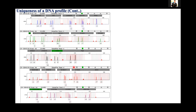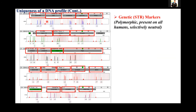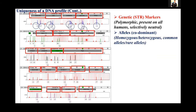This is a representative image. To understand the profile, I will share some terminologies. These are STR markers — D3S1358, D8S1179 — called autosomal STR markers. The characteristics of autosomal STR markers are: they are polymorphic, present on all humans, and selectively neutral. The numbers you see on your screen at respective STR markers — 14, 17, 15, 17, 11, 12 — they are called alleles. These alleles are co-dominant in nature and can be homozygous or heterozygous. There may be some common alleles and some rare alleles.